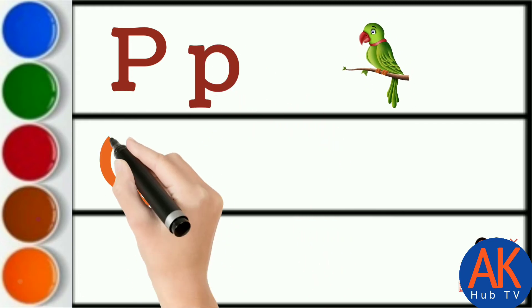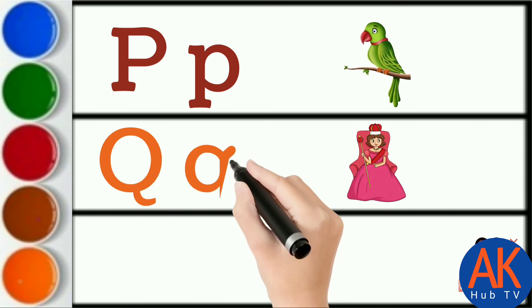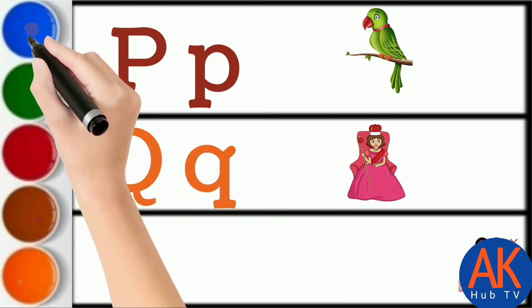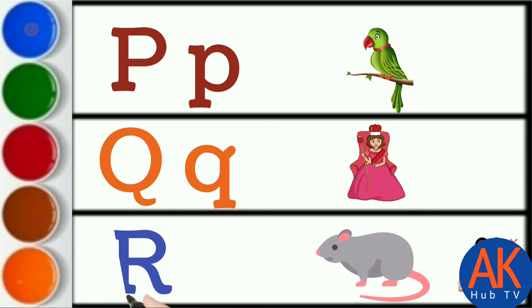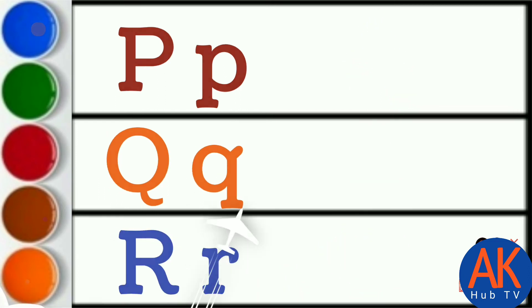Orange color Q. Q for queen. Blue color R. R for rat.